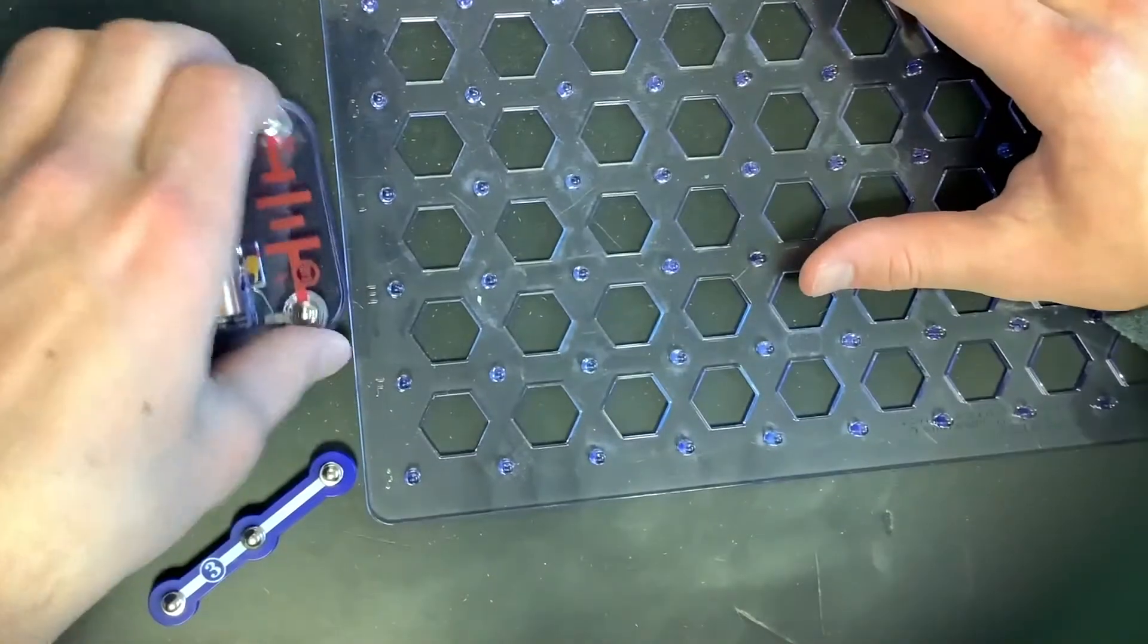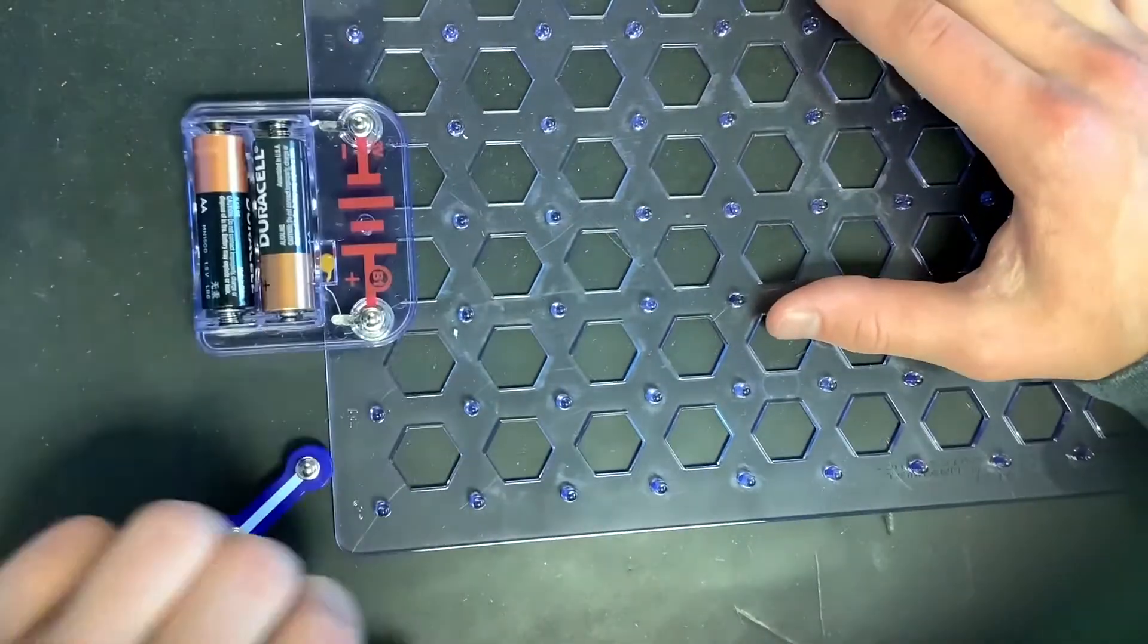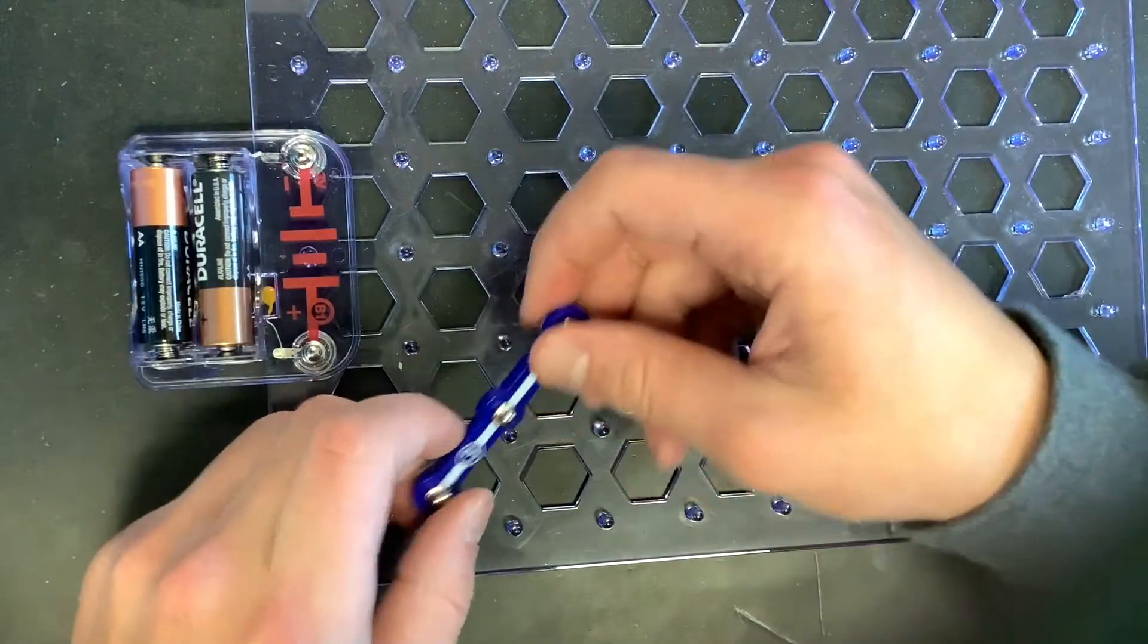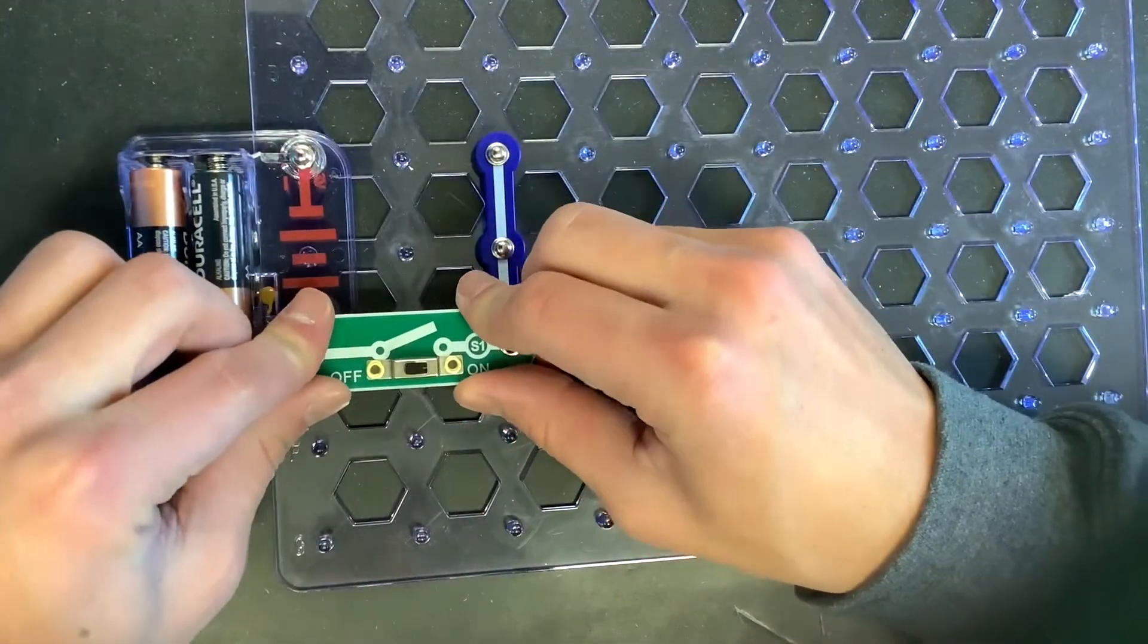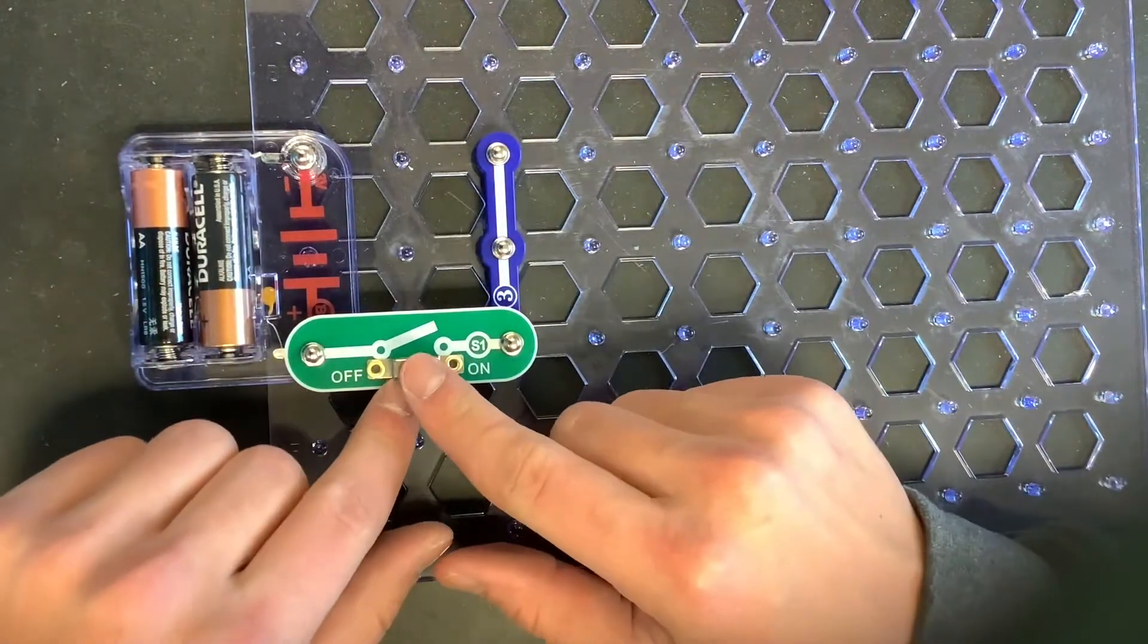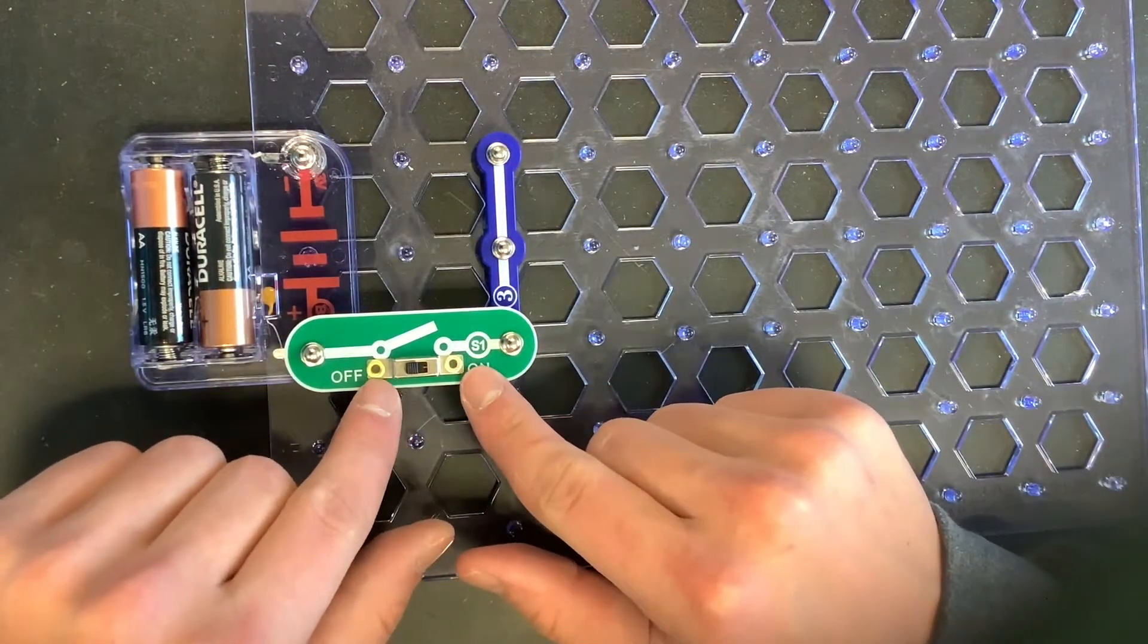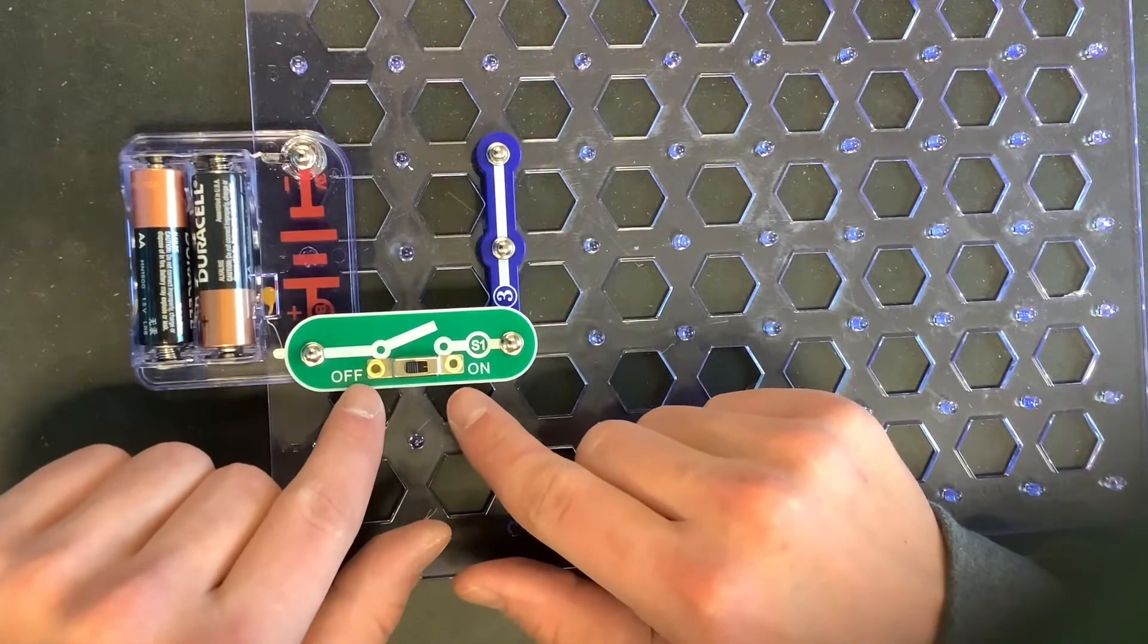So you can start off by connecting your battery pack. And you can do your connector piece. And then you put your switch on. And then whenever you're adding your switch to a circuit, you want to make sure that it's in the off position.